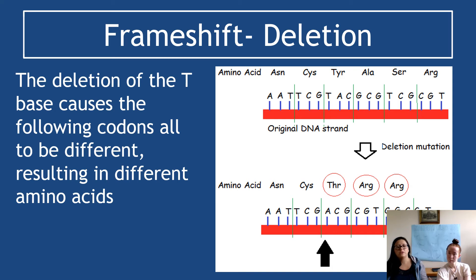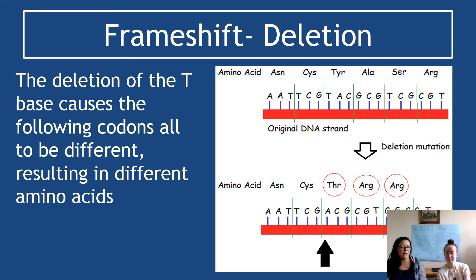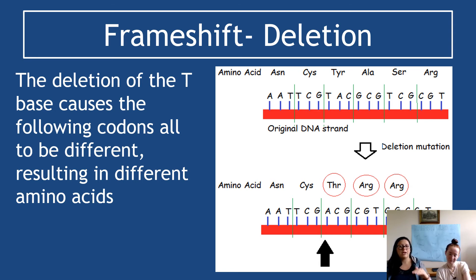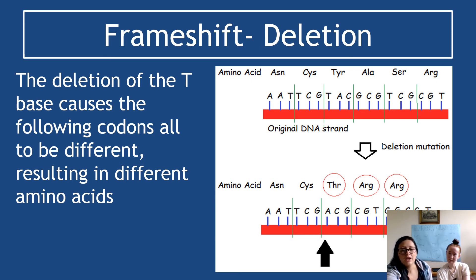For the deletion frame shift effect, there is a deletion of a T base at the point of the black arrow. This causes all the following codons to be different, resulting in different amino acids. The top row shows the amino acids that should have been produced. The deletion mutation causes everything after it to shift one place to the left, resulting in a completely different set of amino acids, with two nucleotides — G and T — left over at the end. That results in different amino acids, a different protein shape, and very likely a non-functioning protein.